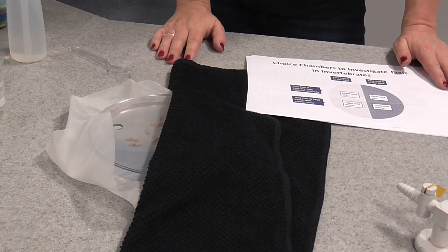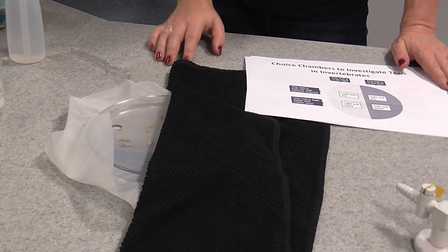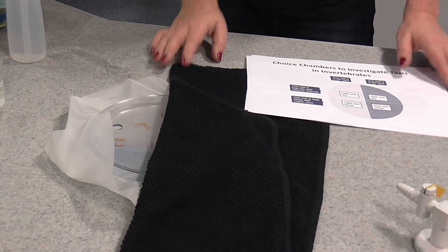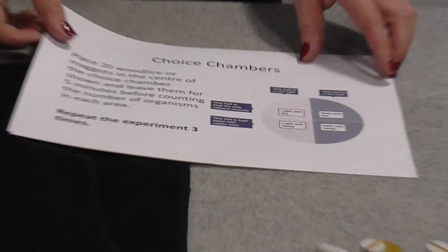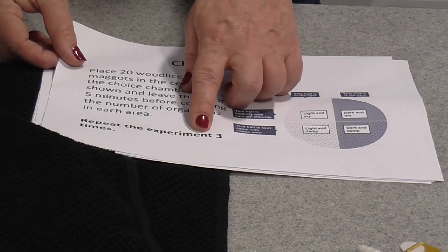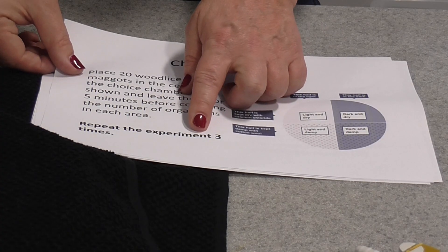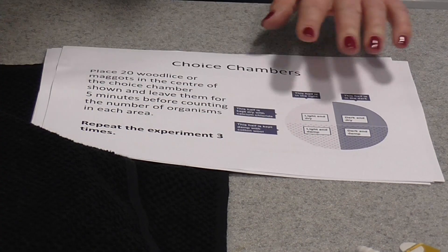And then I'm going to leave it for five minutes before I remove the lid and count the number of maggots in each section. Now this is something that you should repeat several times. So three times this experiment should be repeated in order to get any kind of reliable results.